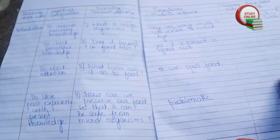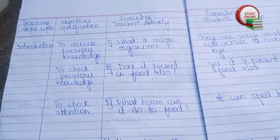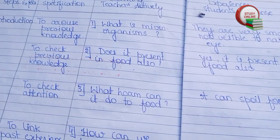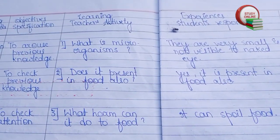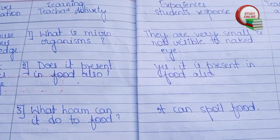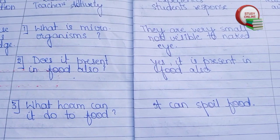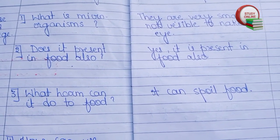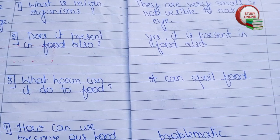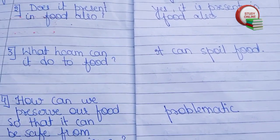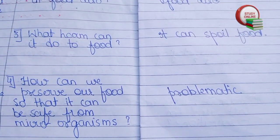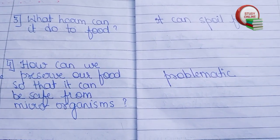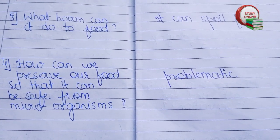Now let's turn the page and see the introduction part. For the introduction part, I have added four questions. For example: what are microorganisms? Are they present in food? What harm can they do to food? Students will answer that they are very small and not visible to our eyes, and yes, they can spoil our food. How can we preserve our food so that it can be safe from microorganisms?